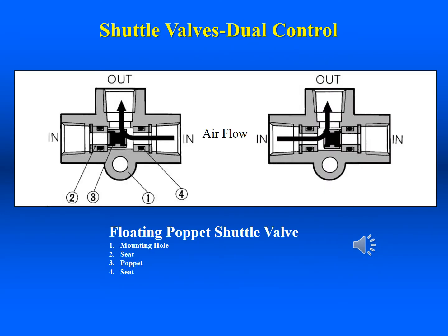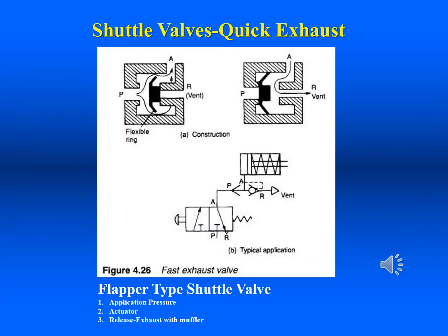Normally, check valves have only two ports. Another type of check valve can allow flow from two sources and from either source to one point. Shuttle valves have three ports. A variation of the shuttle valve is a quick exhaust valve. These three-ported shuttle valves are used to release fluid directly from an actuator to increase speed and reduce piping. They are used primarily in compressed air systems.